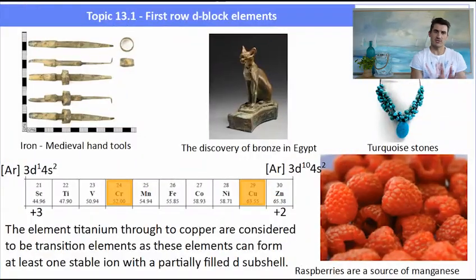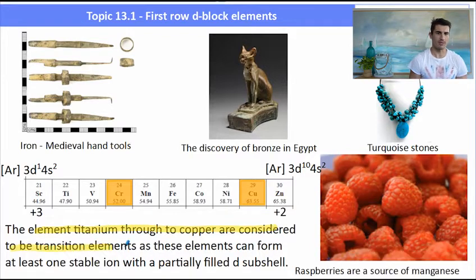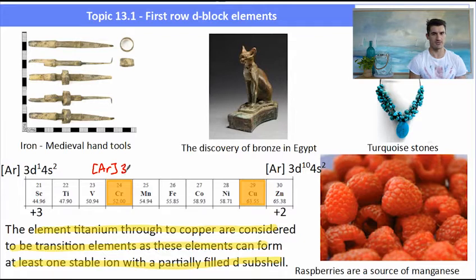Okay transition metals, they have a large number of metals that are useful for society. Now we consider the transition elements titanium through to copper because these contain elements with at least one stable ion with a partially filled d subshell.